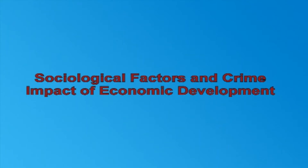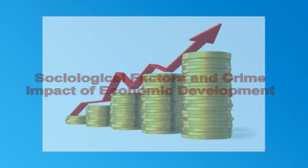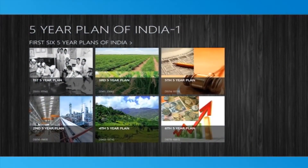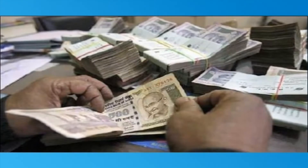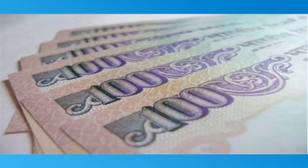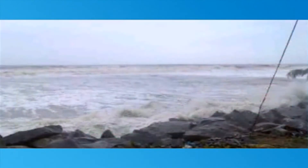Now, we shall pass on to the sociological factors and crime. Let us see the impact of economic development on crime. Economic growth and development have brought many changes in macroeconomic parameters like national income, per capita income, aggregate production, total investment, savings, employment levels, etc. Development brings structural changes in the economic system. Since the five-year plans were launched, the national income and per capita income have been steadily increasing. No doubt prices also are increasing. Today, an average building worker earns a daily wage of rupees 500 to 600, which is many times greater than what their counterparts were getting some 20 to 30 years back.